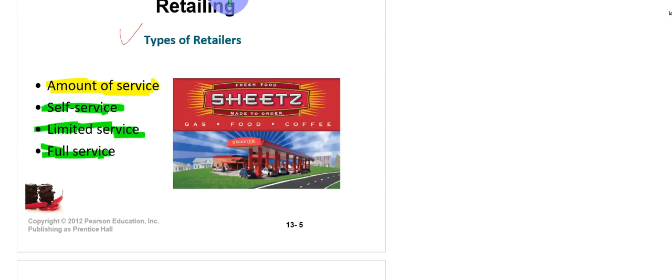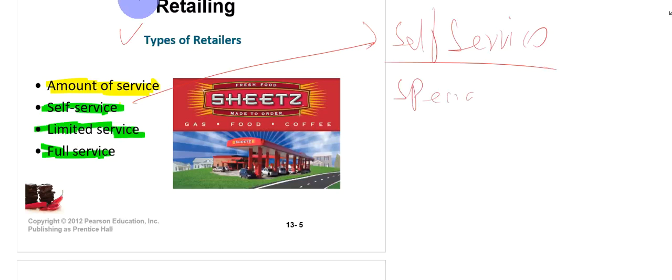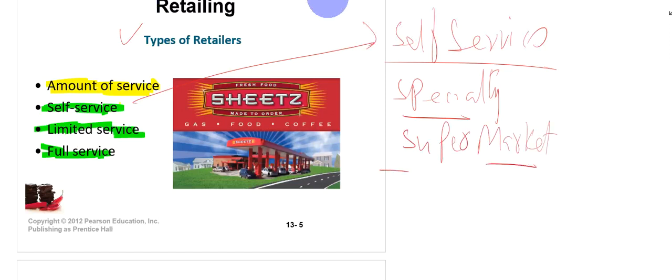Self-service means consumers do all the purchasing by themselves. Normally in specialty stores and supermarkets, consumers and buyers do not need any person to help them. The second type is limited service — limited service retailers offer more service assistance because they carry more shopping goods. Customers need information about these goods, and the operating costs of these retailers are high, which results in higher prices.